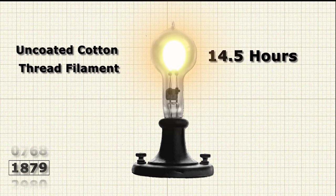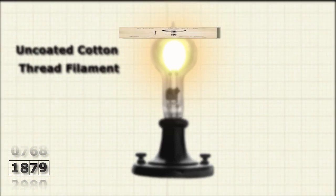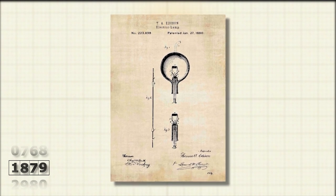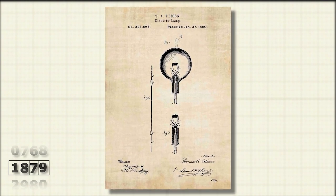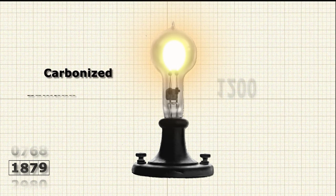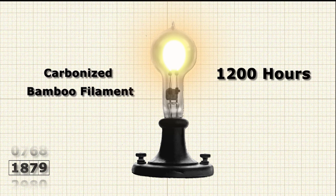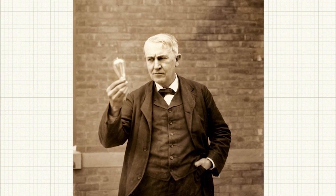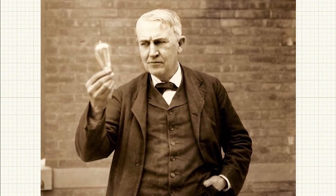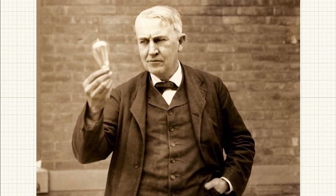In 1879, Edison filed US patent for an electric lamp using a carbon filament or strip coiled and connected to platinum contact wires. After several months after the patent was granted, Edison and his team discovered that a carbonized bamboo filament could last over 1200 hours. This discovery marked the beginning of commercially manufactured light bulbs and in 1880, Thomas Edison's company, Edison Electric Light Company, began marketing it as a new product.